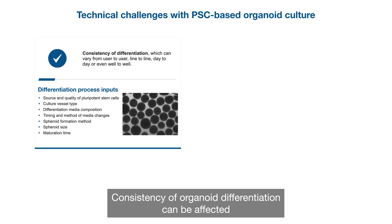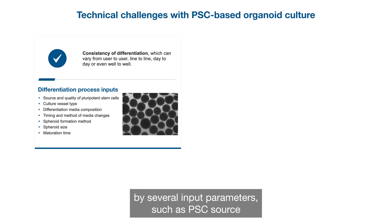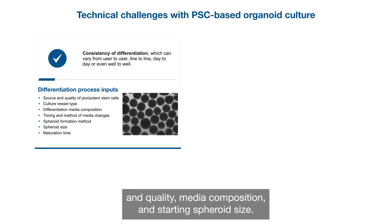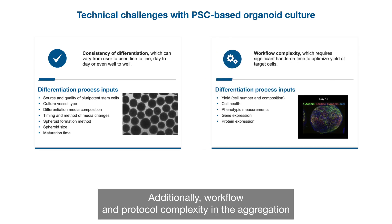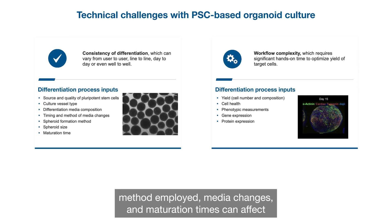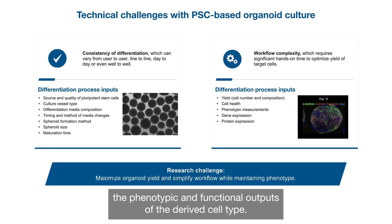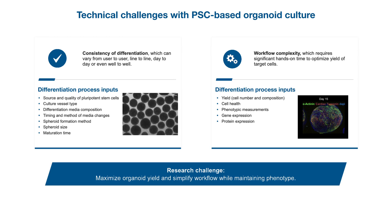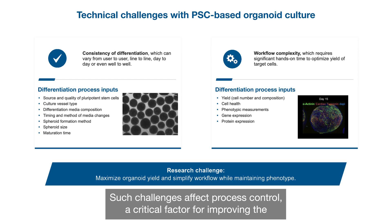Consistency of organoid differentiation can be affected by several input parameters, such as PSC source and quality, media composition, and starting spheroid size. Additionally, workflow and protocol complexity in the aggregation method employed, media changes, and maturation times can affect the phenotypic and functional outputs of the derived cell type. Such challenges affect process control, a critical factor for improving the ability to generate robust organoid models.